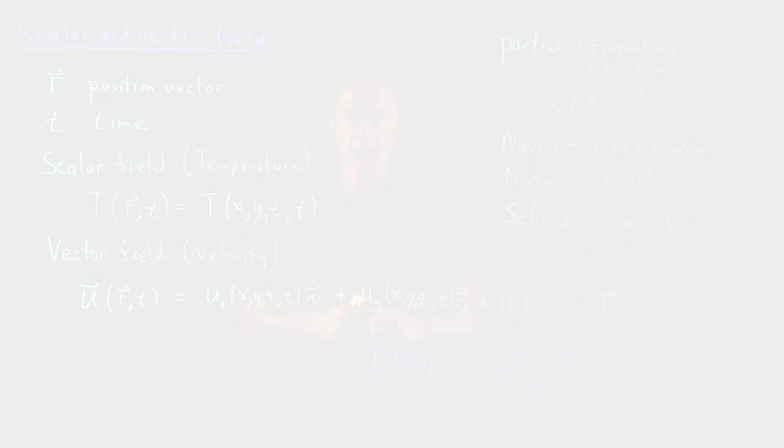So in this graph, the current carrying wire is coming out of the graph. And this is the circulating magnetic field around the wire. The visualization uses arrows. And the arrows point in the direction of the magnetic field. And their length is proportional to the strength of the magnetic field.